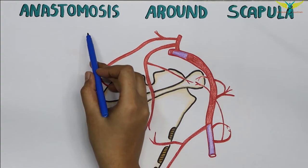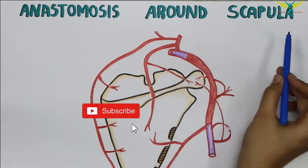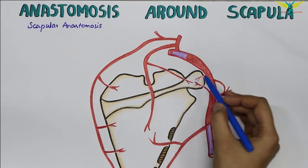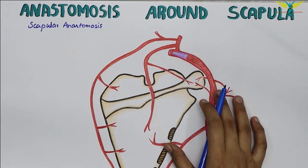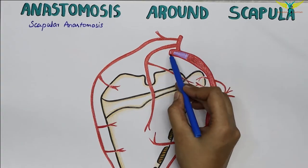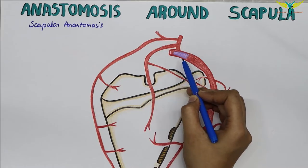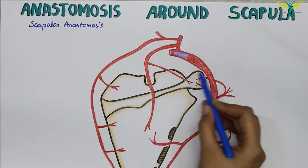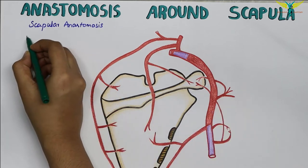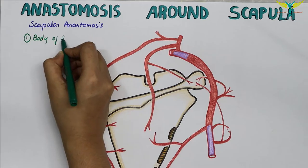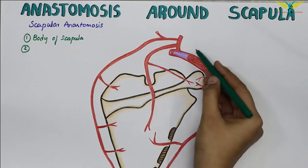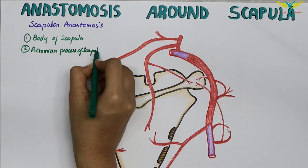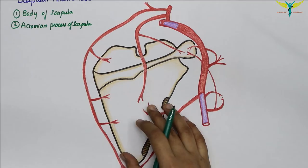In this video, let's learn about the anastomosis that takes place around the scapula — the scapular anastomosis. The arterial anastomosis around the scapula is mainly formed between the branches of the first part of the subclavian artery and the third part of the axillary artery. The scapular anastomosis takes place at two places: one is at the body of the scapula, and another one takes place over the acromion process of the scapula.